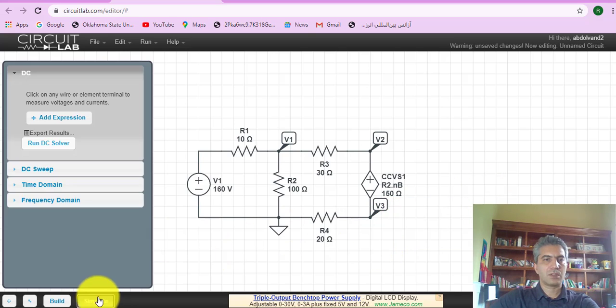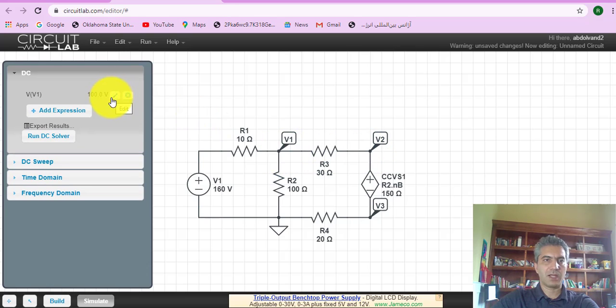So with that I go back to simulate, run DC solver, and it says that everything was calculated. Now what I need, I just move my mouse up to these nodes and this probe shows up and I click and I see the value.